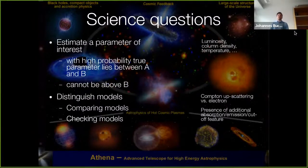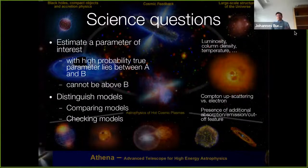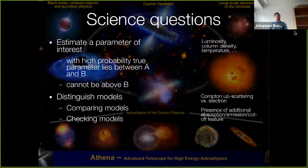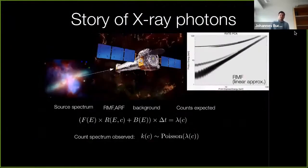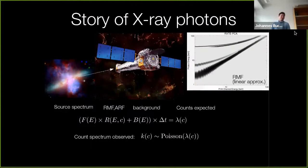And the second type of science question is we want to distinguish different processes, for example Compton scattering versus bremsstrahlung or something like that, or test for additional absorption emission or cutoff features. So that would be comparing models. Another aspect is checking whether one particular model can actually explain the data. Here I just want to give a bit of a brief story of how we tell ourselves the observations are done.